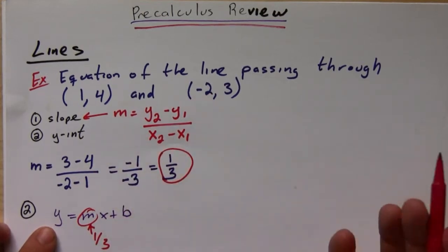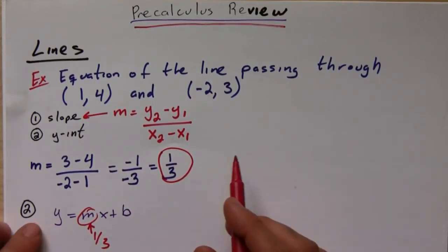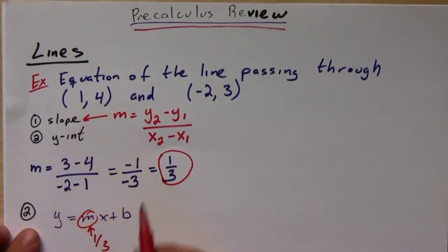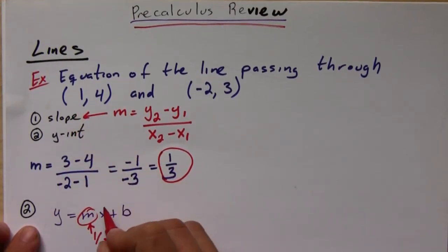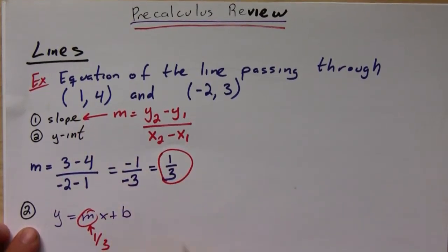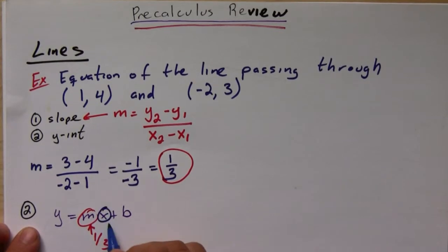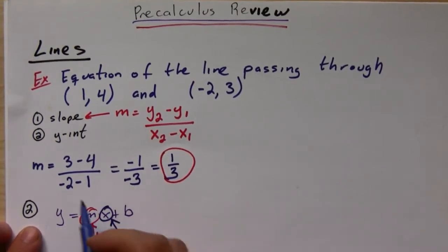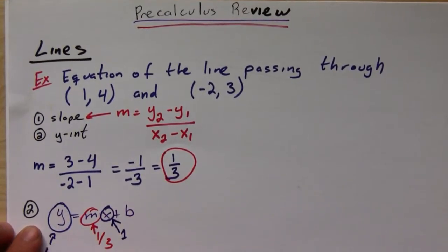So all you've got to do is plug in one of them, whichever one you think is easiest. So let's plug in this one, (1,4). So 1 is the x value, so plug in 1 for x, and we'll plug in 4 for y, and we're going to solve for b.